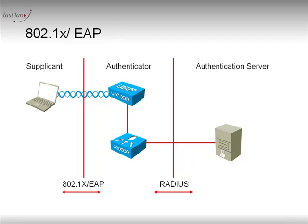So there are two protocols coming into play here: 802.1x and EAP. 802.1x has a specific role. Its role is to allow the authenticator — that is in this case the access point — to close the radio and not allow any access to the network to the supplicant as long as the authentication server has not agreed to the authentication.